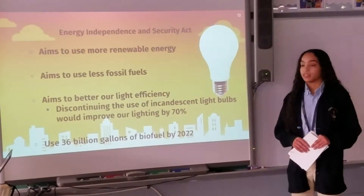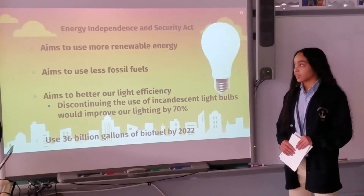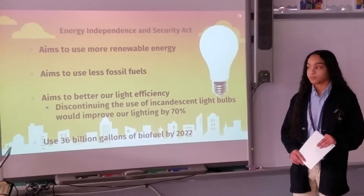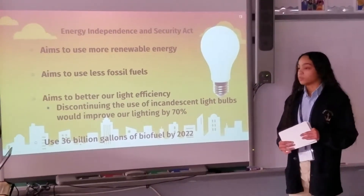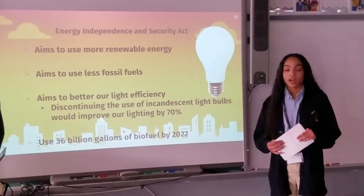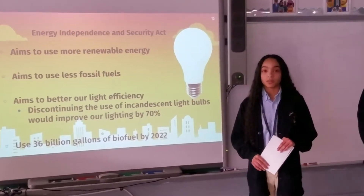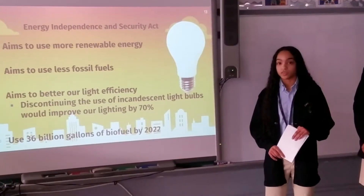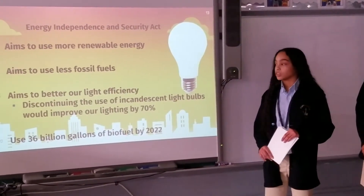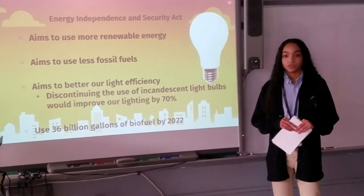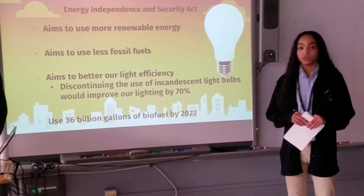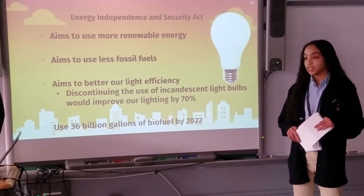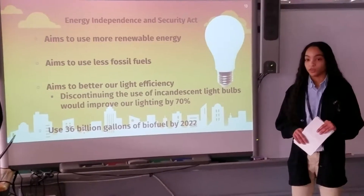Finally, the Energy Independence and Security Act aims to use more renewable energy and burn less fossil fuels. It also aims to improve our lighting efficiency — our lighting efficiency can be improved by 70% by discontinuing the use of incandescent light bulbs. Additionally, this plan calls for the use of 36 billion gallons of biofuel by 2022.